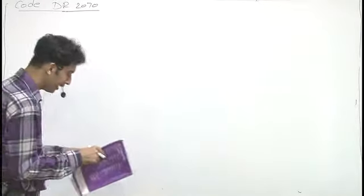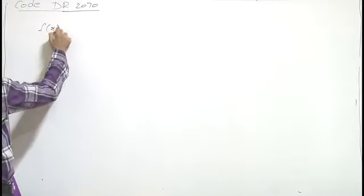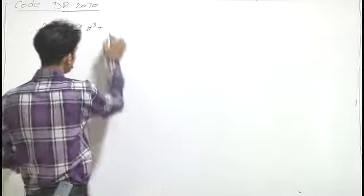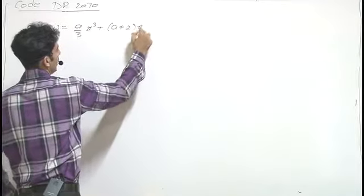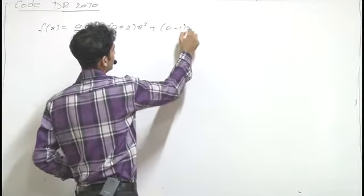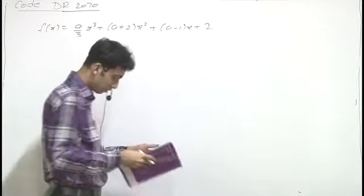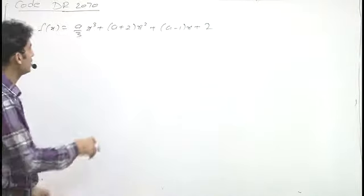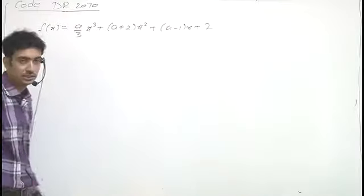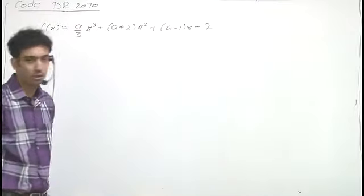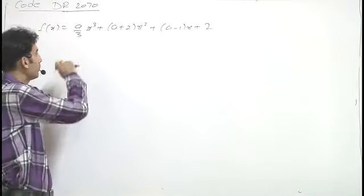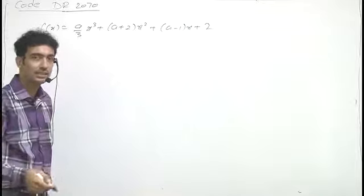In this question, a function is given, and we have to find the set of all possible real values of A for which this function f(x) has a negative point of minimum.